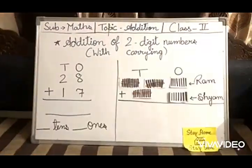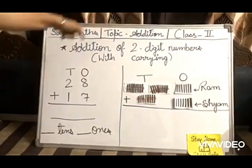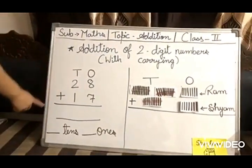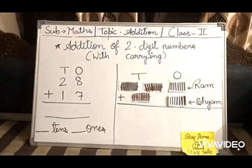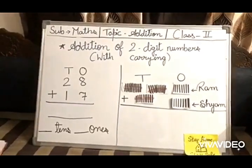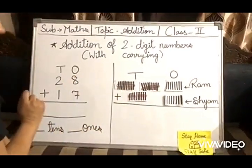So our answer will be nine. 72 plus 20 equals 92 - nine tens, two ones. Now, addition of two-digit numbers with carry. Here's the example: 28 plus 17. But children, we can understand this sum in another way. Suppose Ram is having 28 sticks.